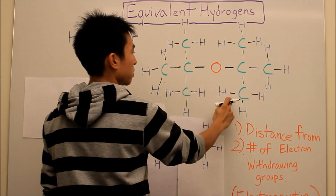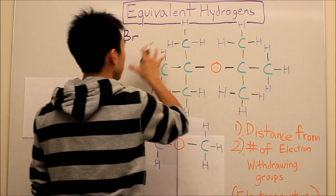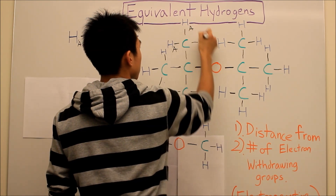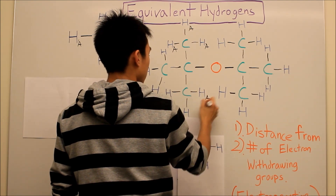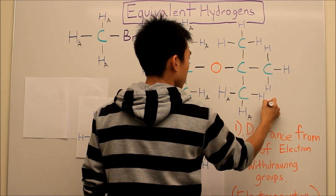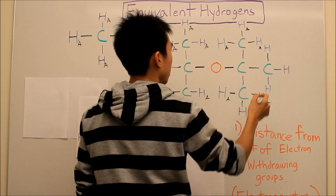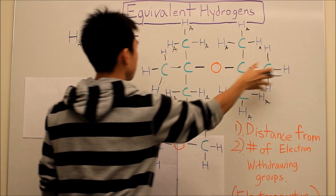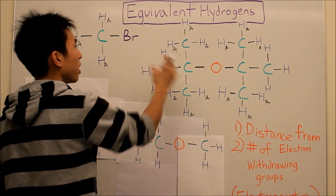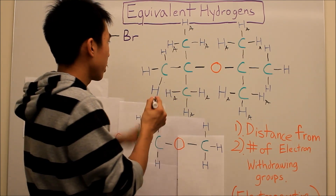One bond, two bonds, three bonds from the oxygen. One bond, two bonds, three bonds from the oxygen. And then these hydrogens here look like they're farther away. You might group them as HA and HB separately. But once again, the bonds are constantly rotating, so they're actually all equivalent to each other.